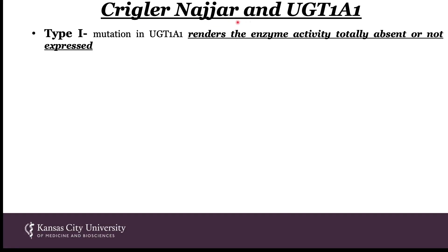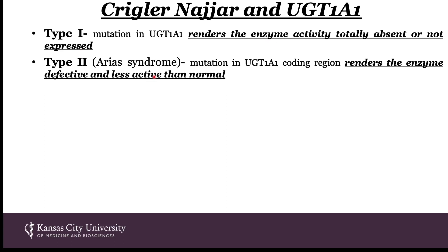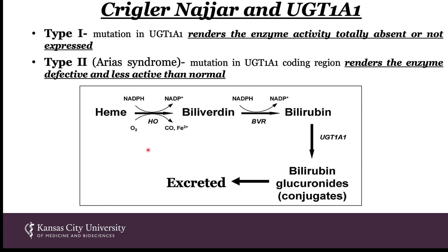In type 1 Krigler-Nyar, a mutation in UGT1A1 renders its activity null — totally absent — or the gene is not expressed at all. In type 2, also called Arias syndrome, the mutation in the coding region renders the enzyme defective and less active than normal, but these patients retain some UGT1A1 activity. The reaction: heme is broken down to biliverdin, then bilirubin, then UGT1A1 produces bilirubin glucuronides — bilirubin with glucose conjugated onto it. This molecule is highly water-soluble and can be excreted.